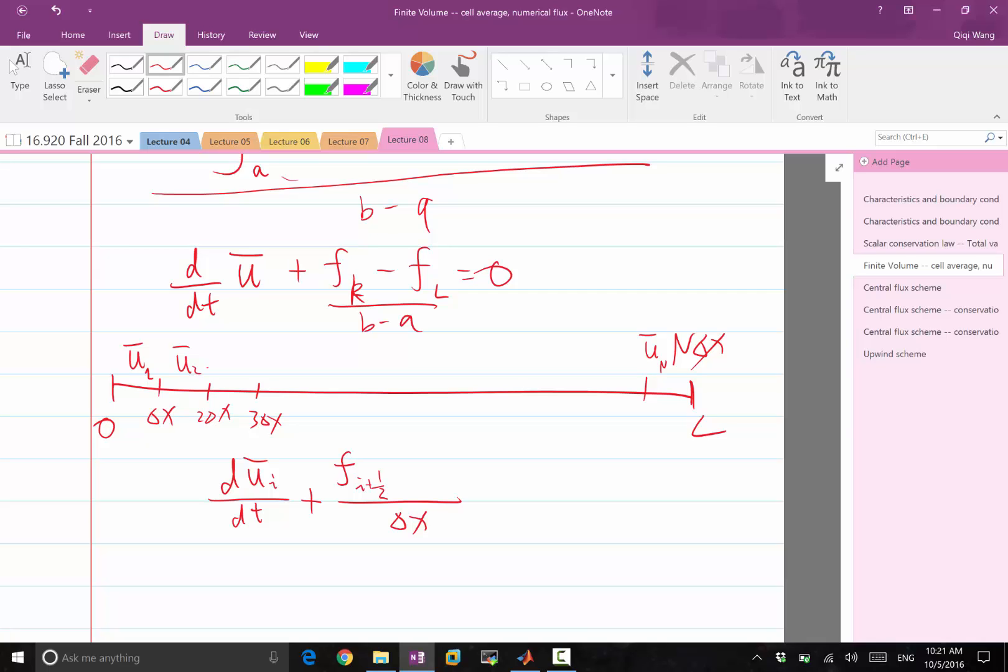and the grid points now become like second-class citizens. So we use the half-fractional numbers to denote them. Like in finite difference, the grid points are first-class citizens. We use integers to denote them. In finite volume, that's not the case. We reserve the integers to denote the cells, and the boundaries, they are less important. We use fractional indices. Minus f of i minus half, equal to zero, all right?